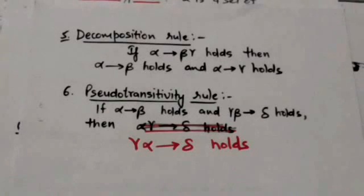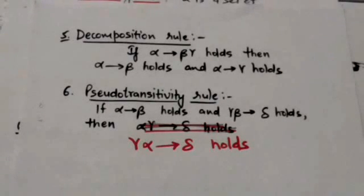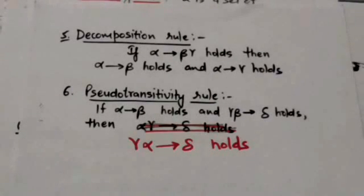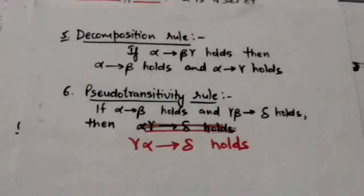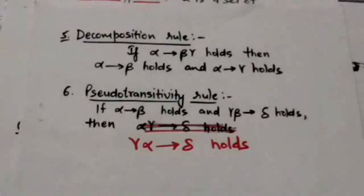The sixth rule is the pseudotransitivity rule. It states that if a functional dependency from alpha to beta holds and a functional dependency from gamma-beta to delta holds, then the functional dependency from gamma-alpha to delta also holds. Here gamma-beta denotes gamma union beta and gamma-alpha denotes gamma union alpha.